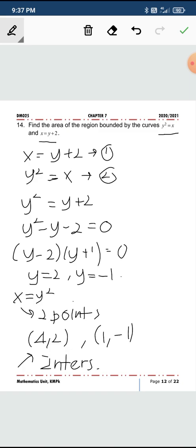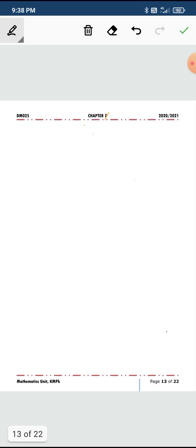Now you have to sketch. Sketch to get an idea of the region so that you would know which function will become the roof, the top one, and which function will become the base. You're supposed to sketch this: x equals to y-squared and x equals to y plus 2. We are so used to in terms of y, x minus 2. This will be the y-intercept.